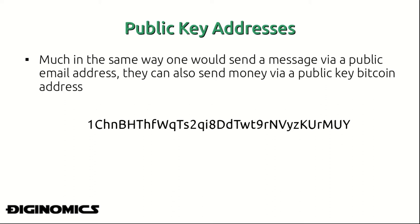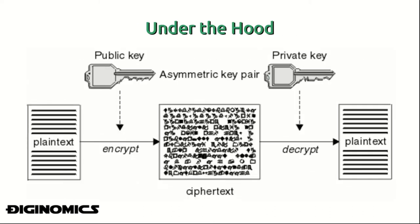When we go under the hood, each address and each Bitcoin wallet carries with it a public key and a symmetrical private key, and this is created through the Elliptic Curve Digital Signature Algorithm. The public key is used to encrypt the plain-text transaction, and the private key likewise is used to decrypt it or authorize the transaction.